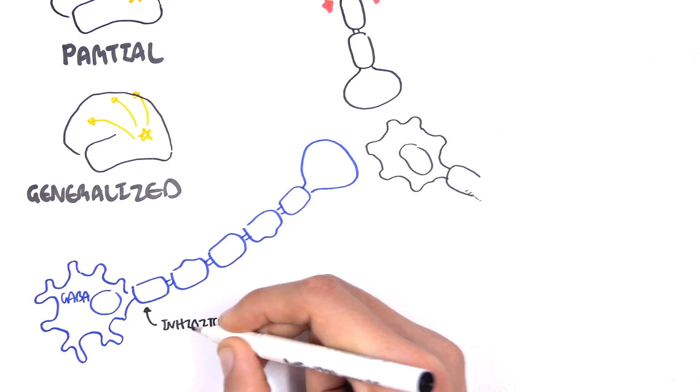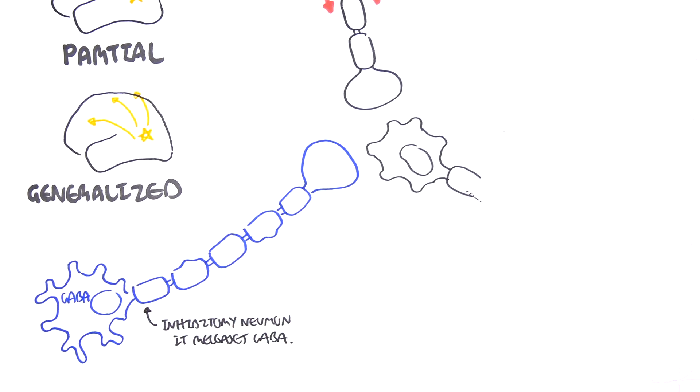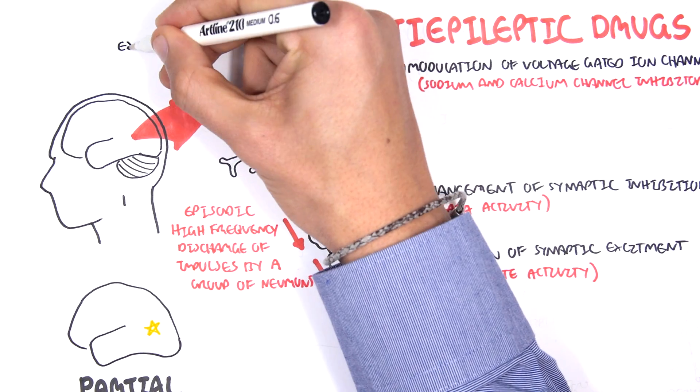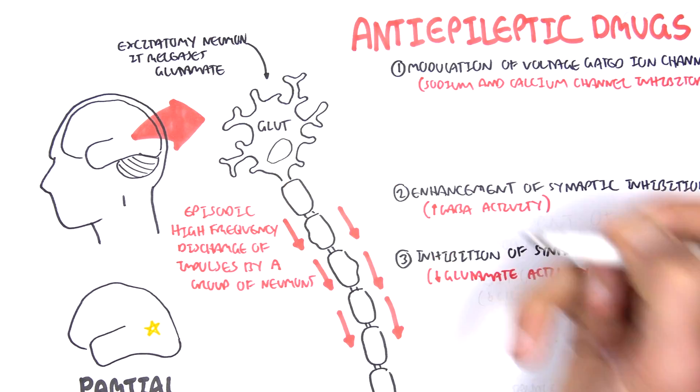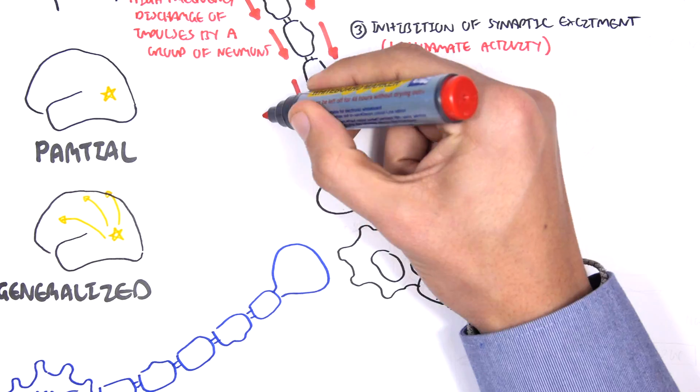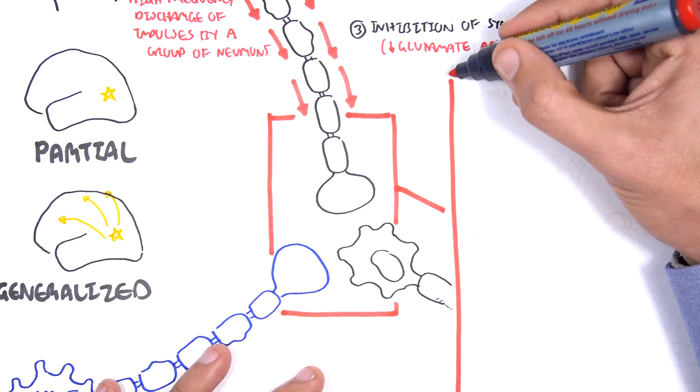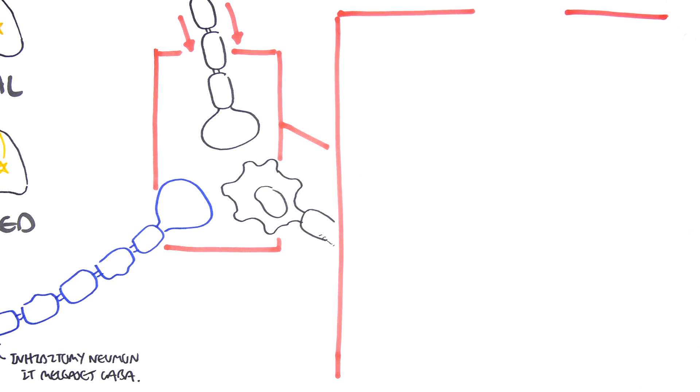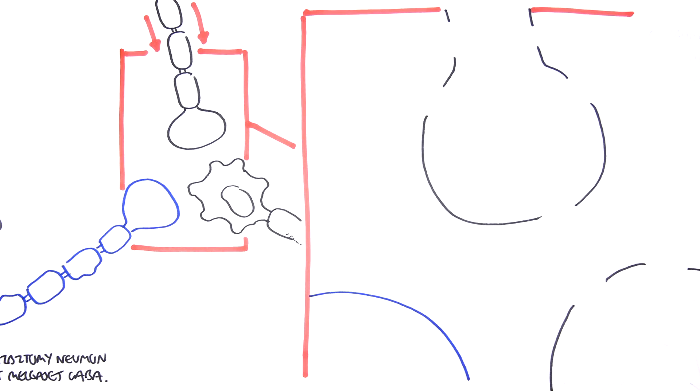GABA is an inhibitory neurotransmitter, and the neuron that releases glutamate is an excitatory neuron. Let's zoom in here where all these synapses are occurring and learn about the physiology and pharmacology. Here I'm drawing the glutaminergic neuron terminal bulb, the postsynaptic neuron, and the blue GABAnergic neuron.